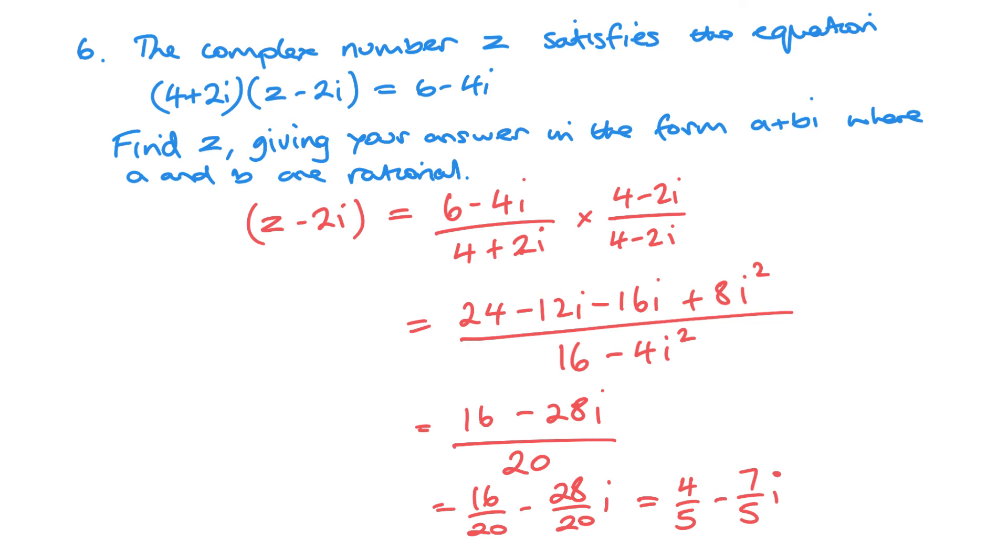And now we want to be comparing this with this one here. So what I'll do is just to keep everything on one page, I'll write this in black. So we've got z minus 2i must be equal to 4 fifths minus 7 over 5i. So if I add the 2i, z will equal 4 fifths plus 3 fifths, because obviously the 2i is the same as 10 fifths there. And that's it done.